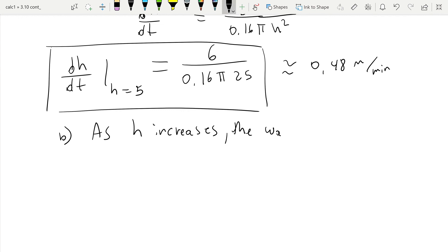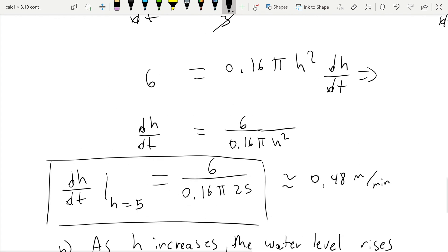The water level rises more slowly, and dH/dt is actually inversely proportional to H squared. And that is the end of this application.